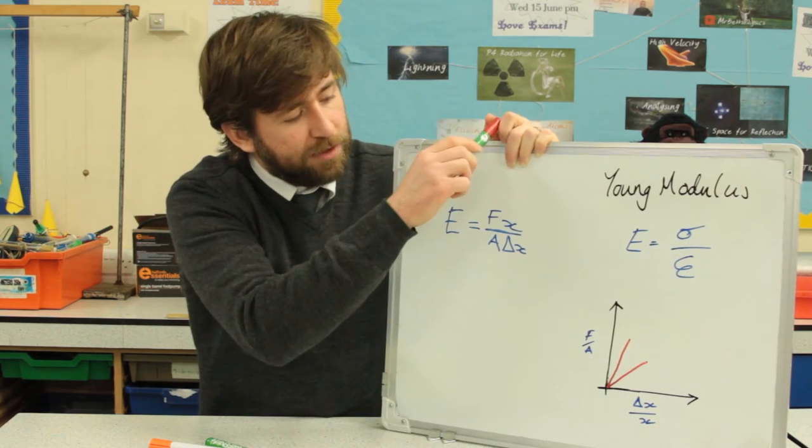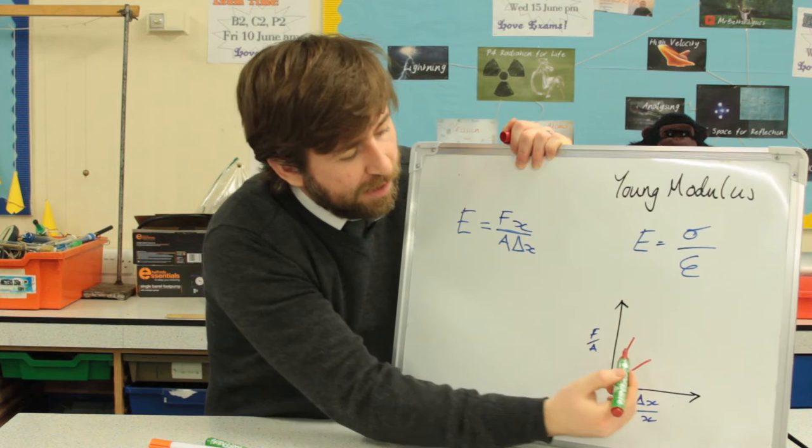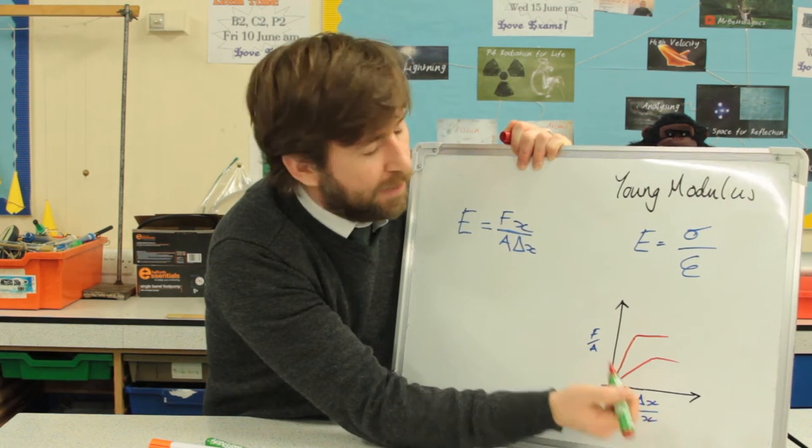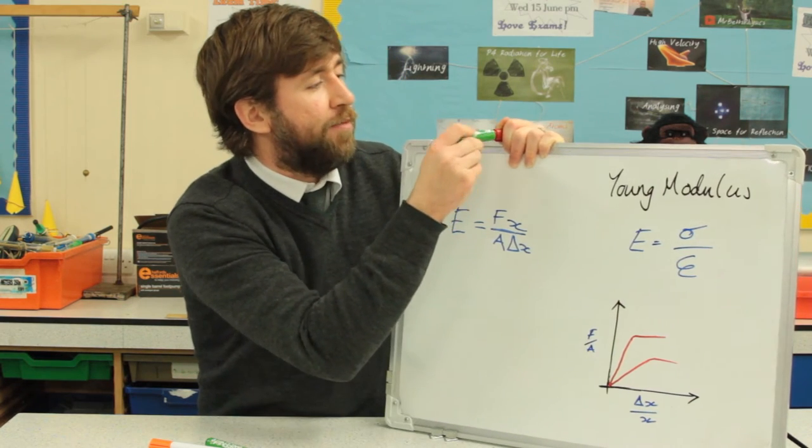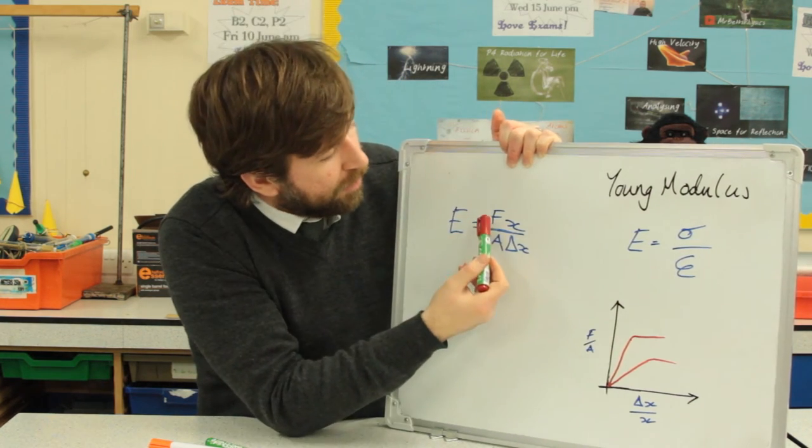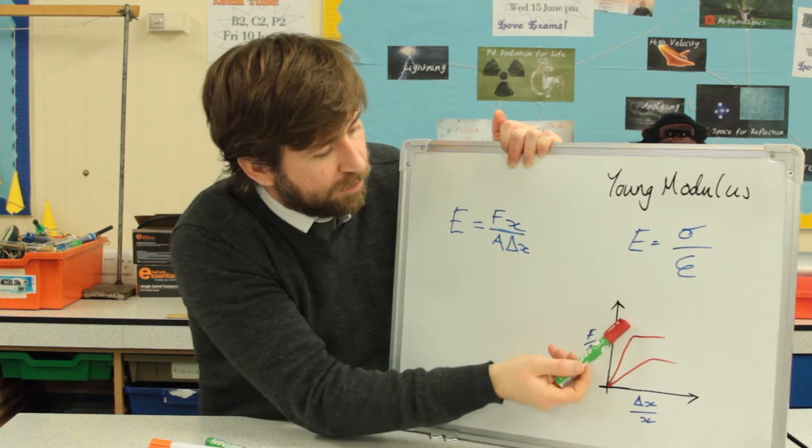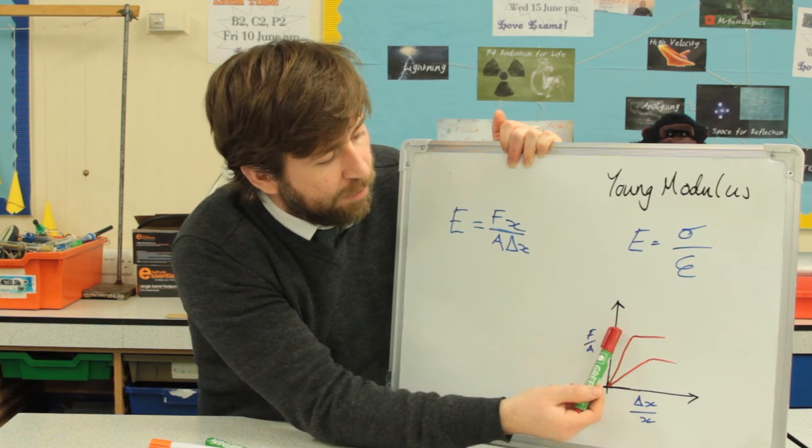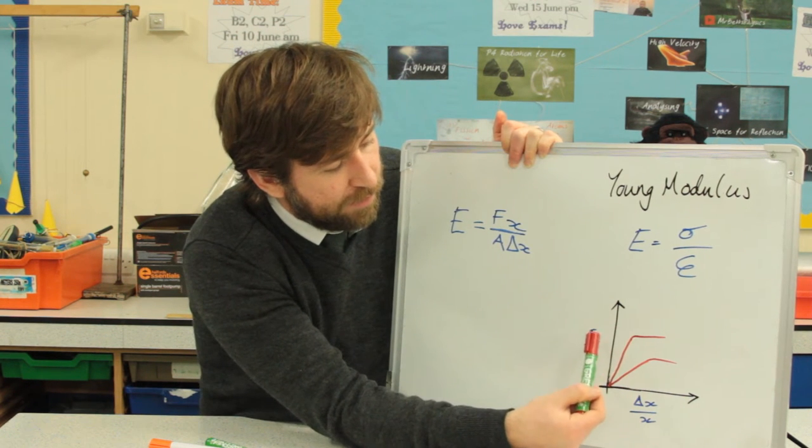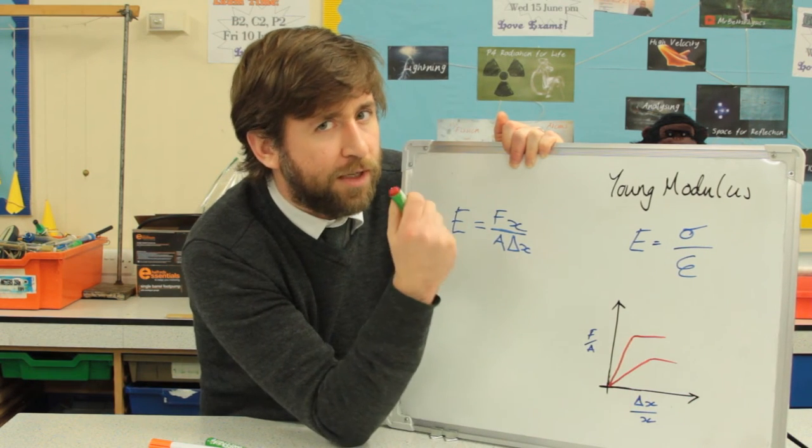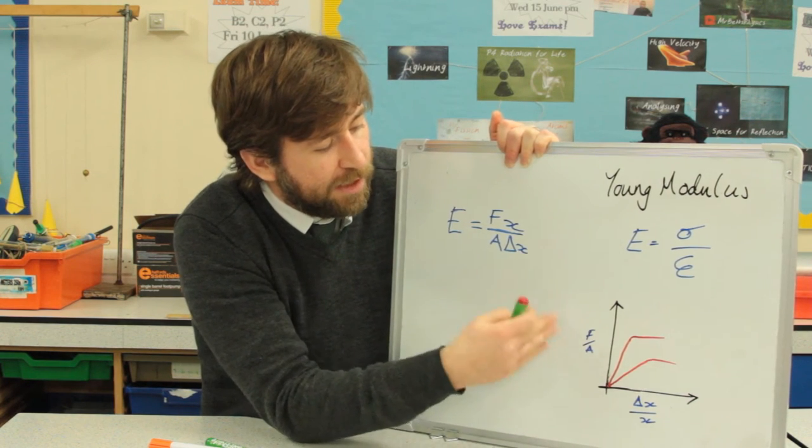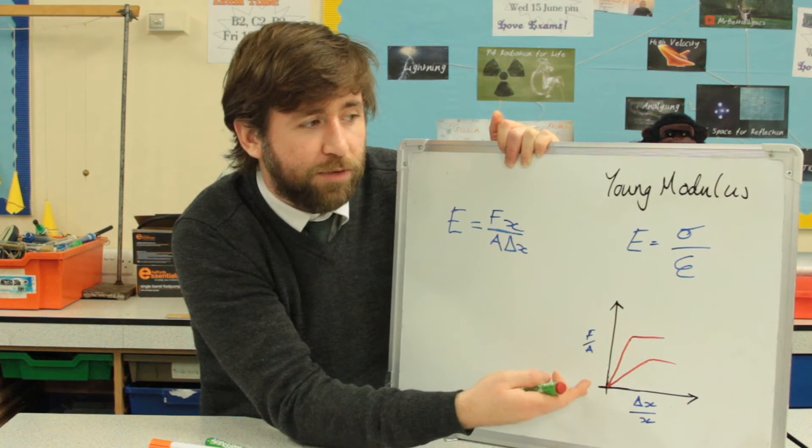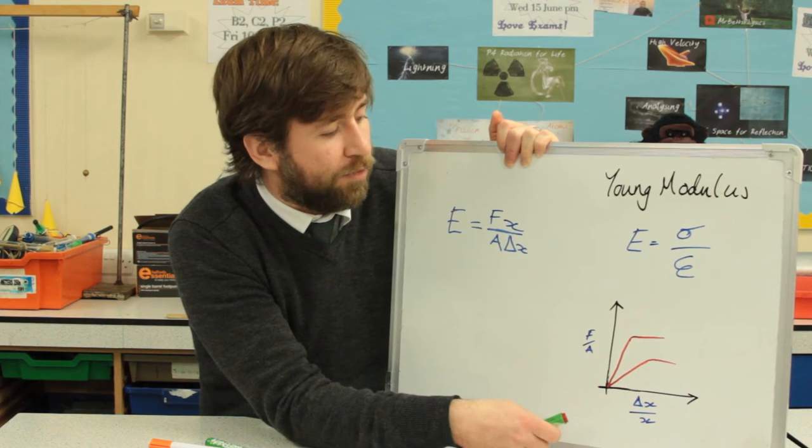So what happens then when we get our plastic regions, let's say, like this? Well actually no longer is Young modulus a constant. Young modulus is the gradient. Now, for the same stress, we're getting a continuously increasing strain. And we say that actually the material has been damaged. It's changed its own material properties. And that could be for a number of reasons.